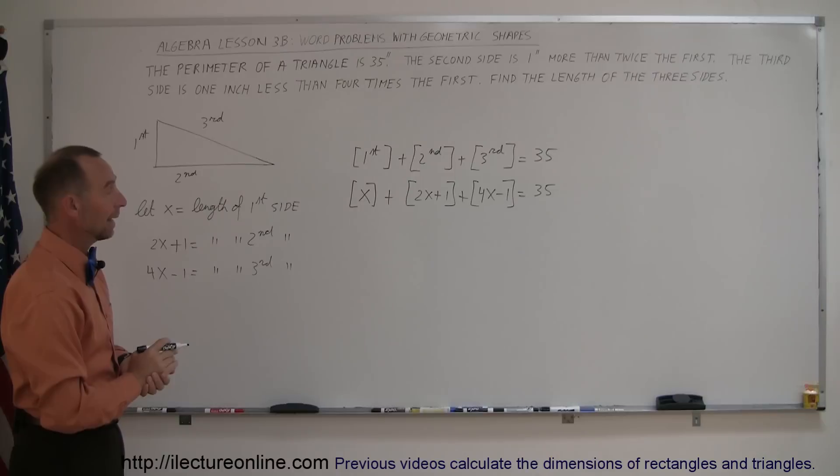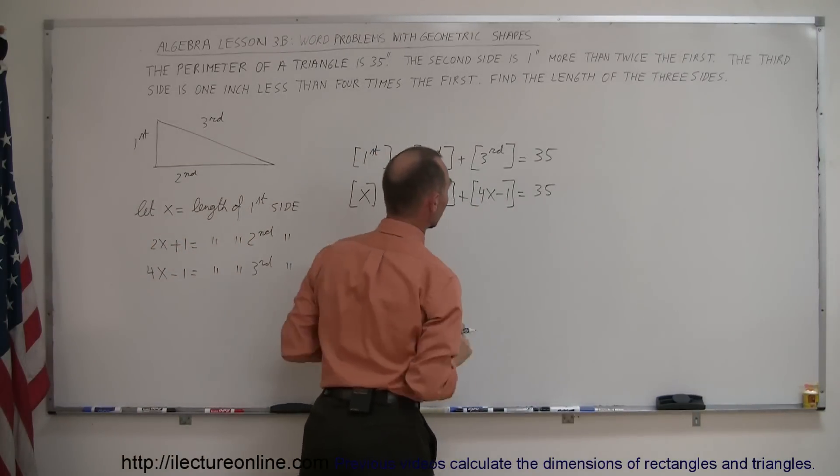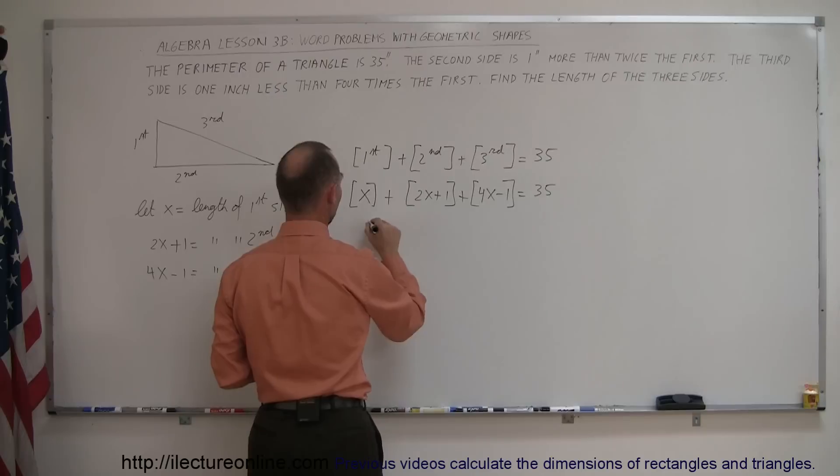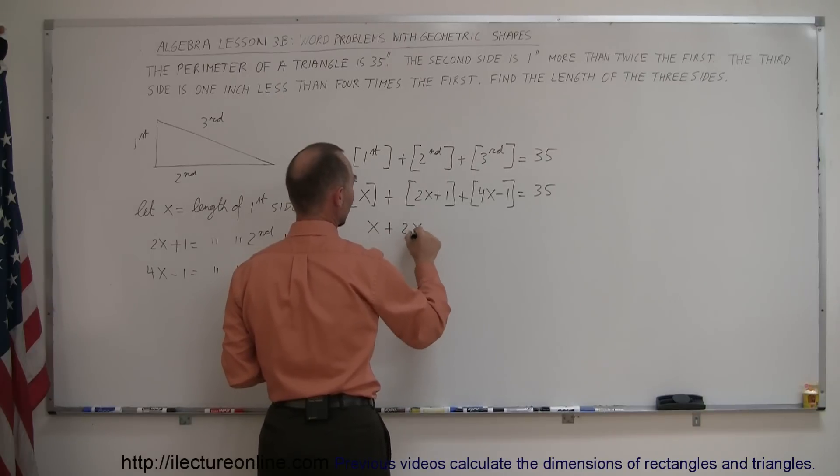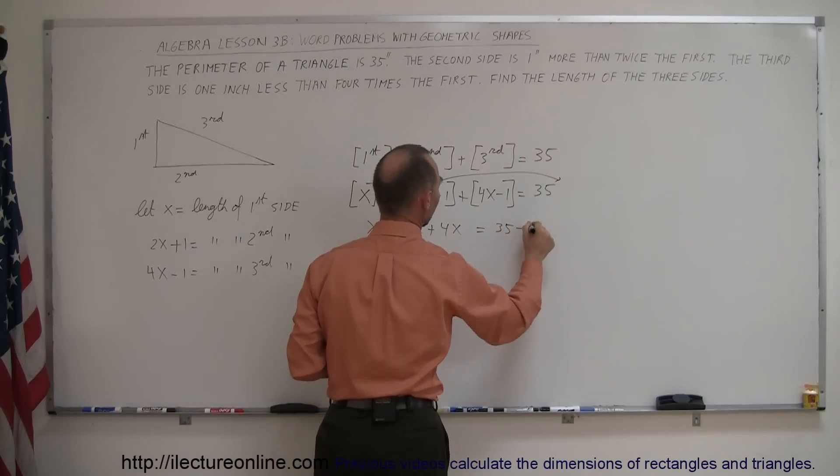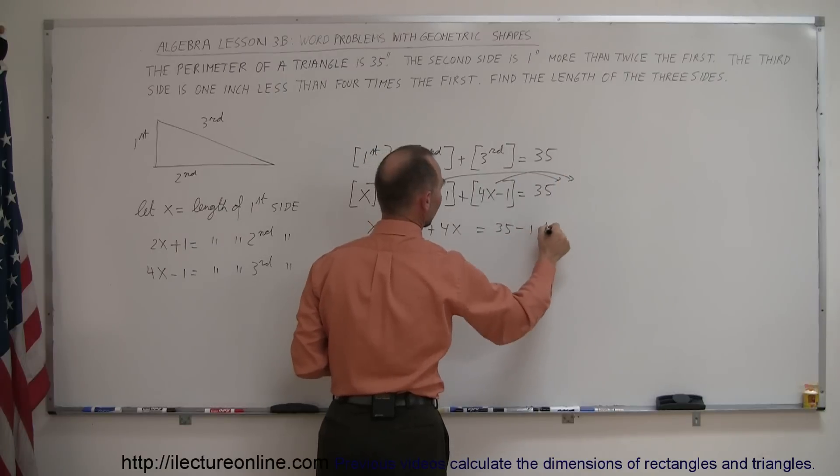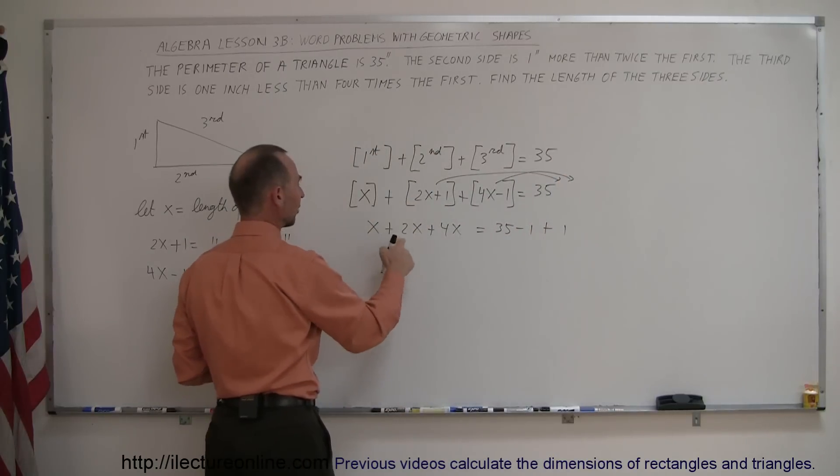So now we can go ahead and leave all the terms with x on one side, and we move all the other numbers to the other side. So we have an x plus a 2x plus a 4x on the left side equals 35. Now we have plus 1 over here, we're going to move that across, that becomes a minus 1, and here we have a minus 1 that goes across, that becomes a plus 1. So adding these together, we have 7x equals 35.